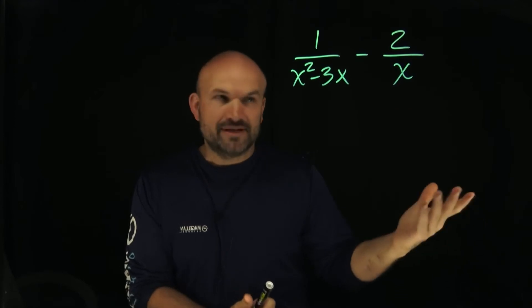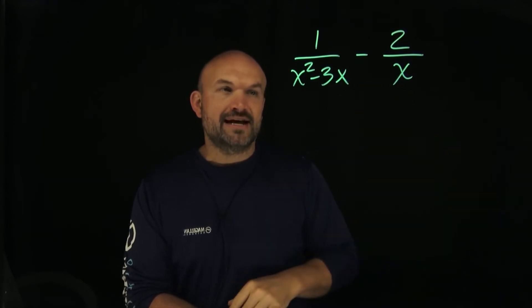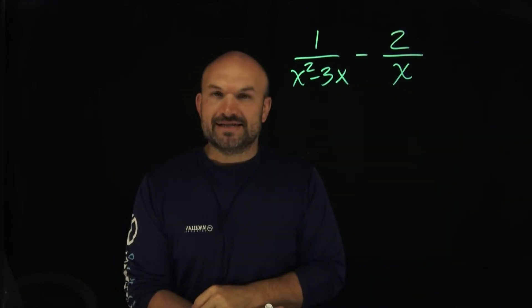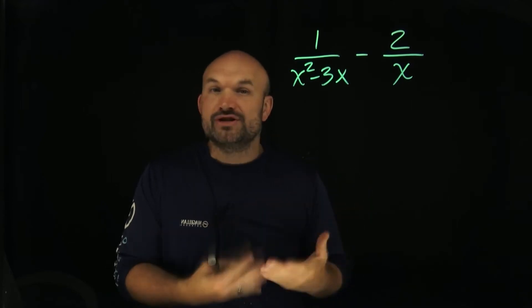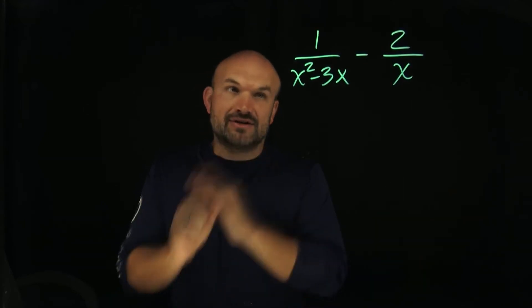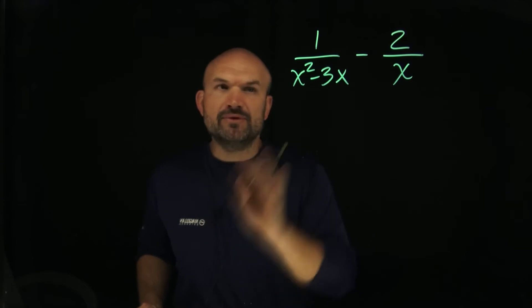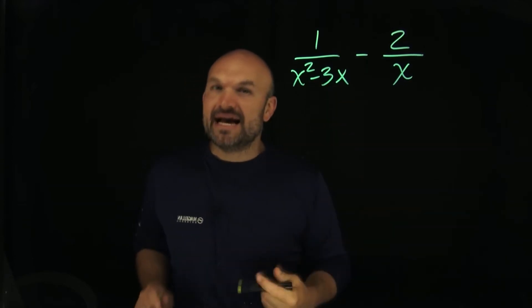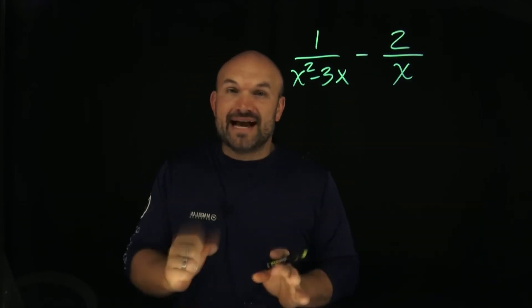With an x here I can't factor anything, so I'm just going to leave that. But over here I have x squared minus 3x, and hopefully you recognize that they both share an x. Basically I can factor out an x. If you're not seeing this, let's rewrite x squared as x times x so you can see they have an x in common.